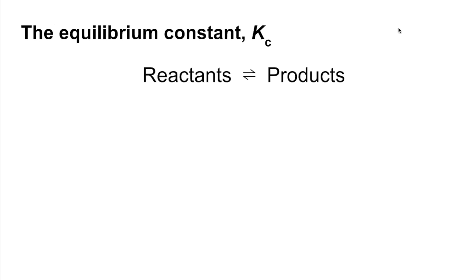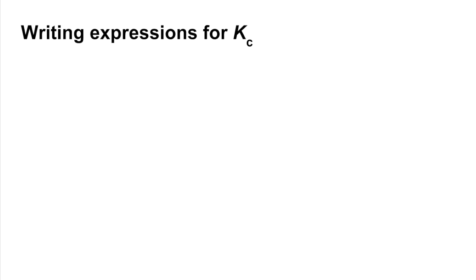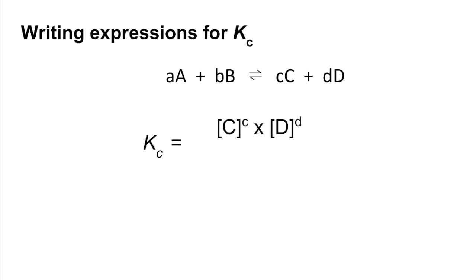Moving on to the equilibrium constant Kc. Kc is essentially a measure of the equilibrium concentrations of the products divided by the reactants. Using a generic equilibrium, where the lower case letters are the balancing numbers, Kc equals the equilibrium concentration of C raised to the power c, all over the equilibrium concentrations of the reactants, each raised to their balancing number.